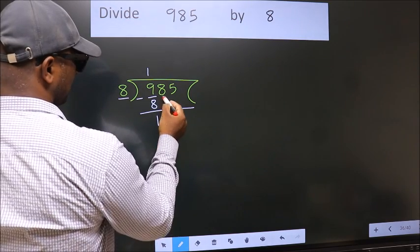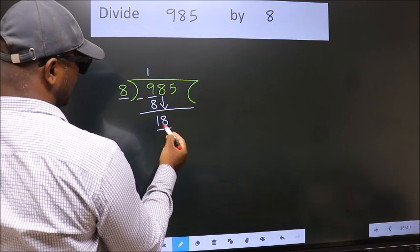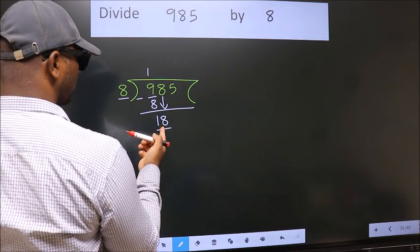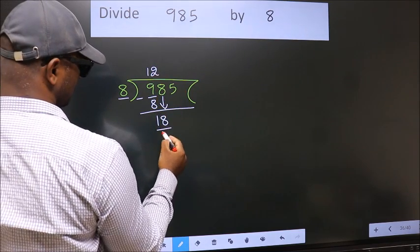After this, bring down the beside number. So, 8 down. So, 18. A number close to 18 in the 8 table is 8 twos, 16.